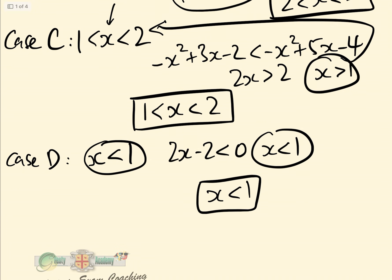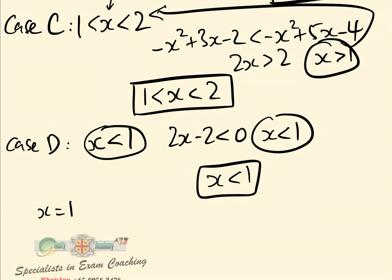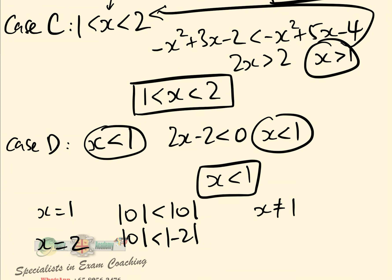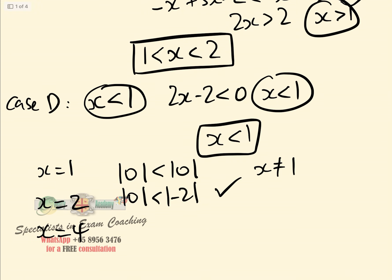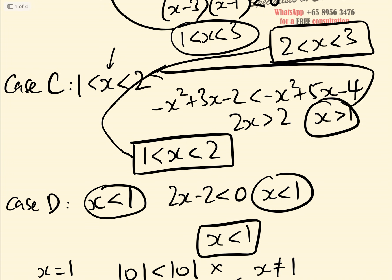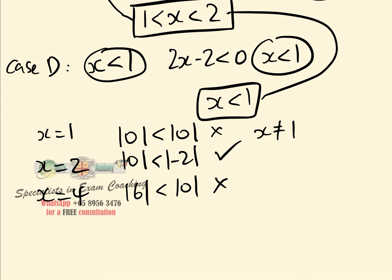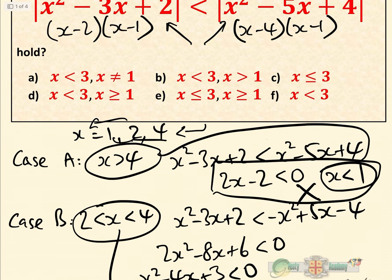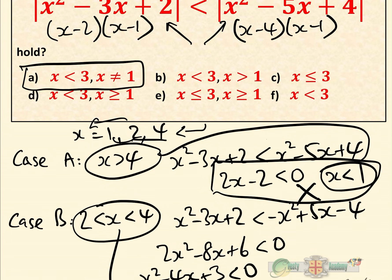Now let's check the critical points. At x equals 1, we get mod 0 less than mod 0, which is not valid. At x equals 2, we get 0 less than mod(minus 2), which is true — so that's fine. At x equals 4, mod 6 less than mod 0 is false, but that's outside our range anyway. Adding up all the solution intervals — x between 2 and 3, between 1 and 2, and x less than 1, with x not equal to 1 — gives us x less than 3, x not equal to 1, which is answer a.